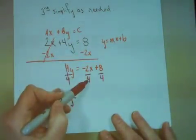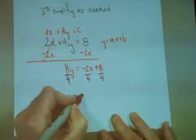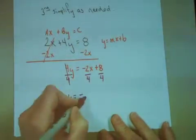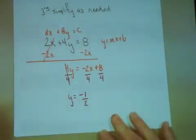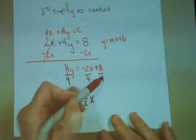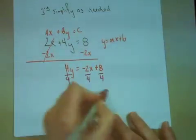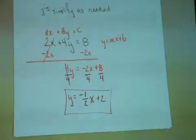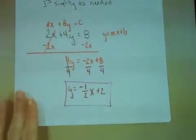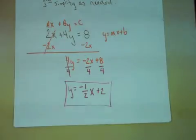Negative 2 over 4. Well, a negative divided by a positive is a negative. But 2 over 4 reduces to 1 half, so I have negative 1 half x. And a positive 8 divided by 4 is a positive 2. And I'm done. We have just transformed the equation 2x plus 4y equals 8 into y equals negative 1 half x plus 2.